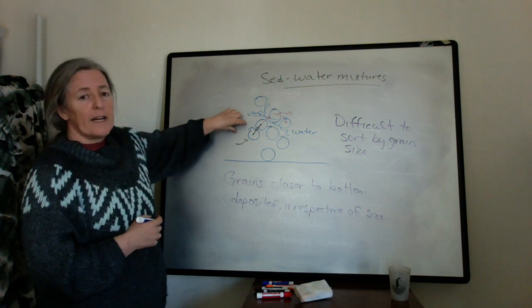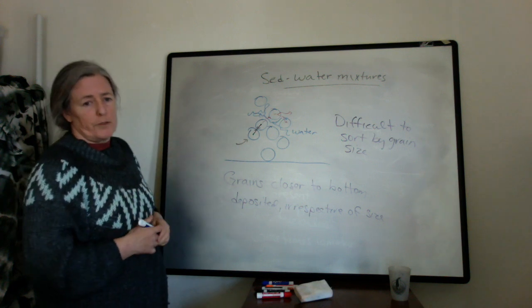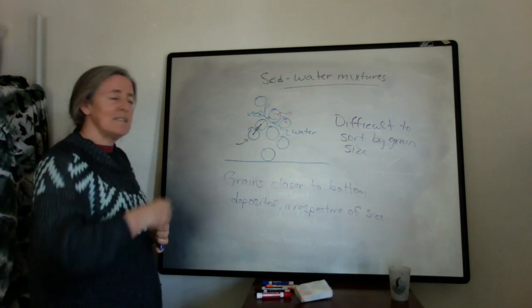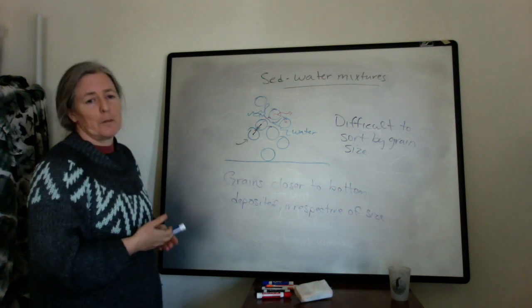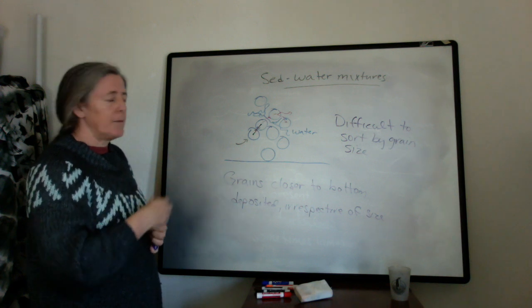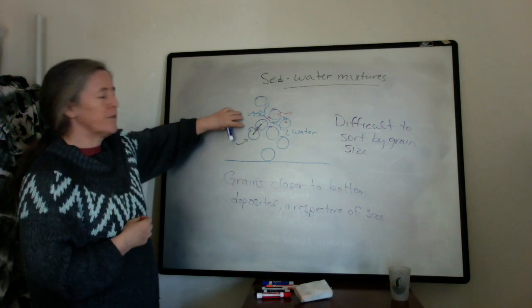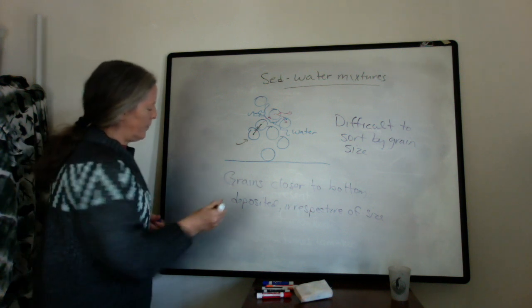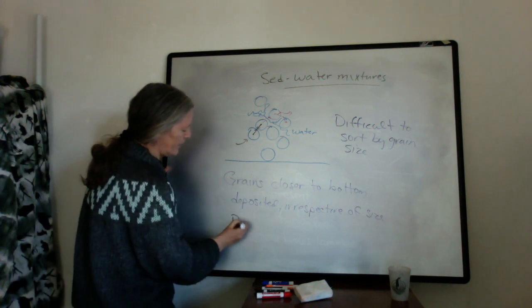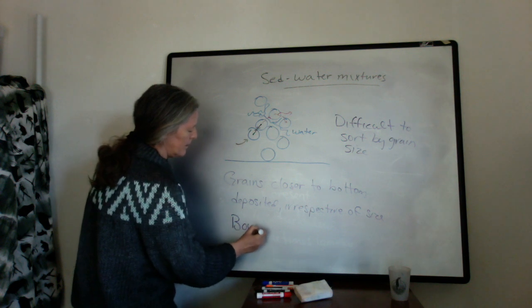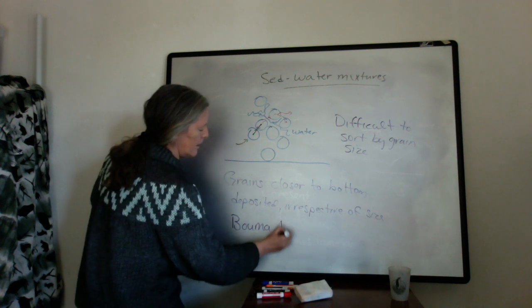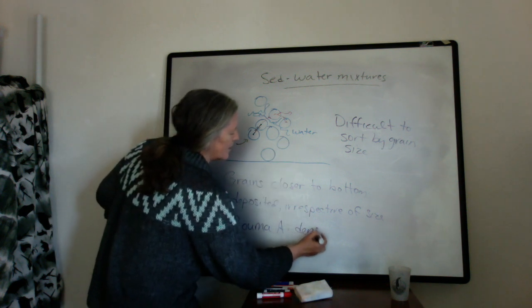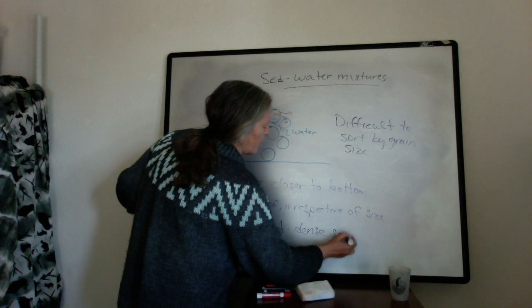And the collisions of the grains stop the bed forms from being created. The bed forms need rolling and saltating grains to create the ripples or even the upper planar lamination. When you have too many grain collisions, it disrupts those bed forms. So basically the Bouma A facies suggest a dense sediment water mixture.